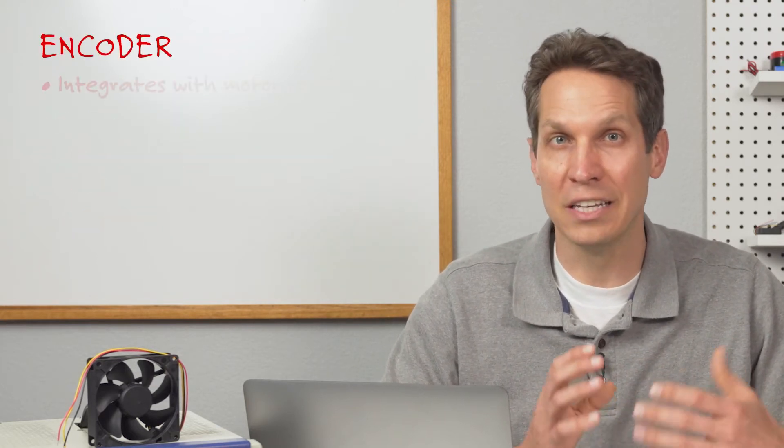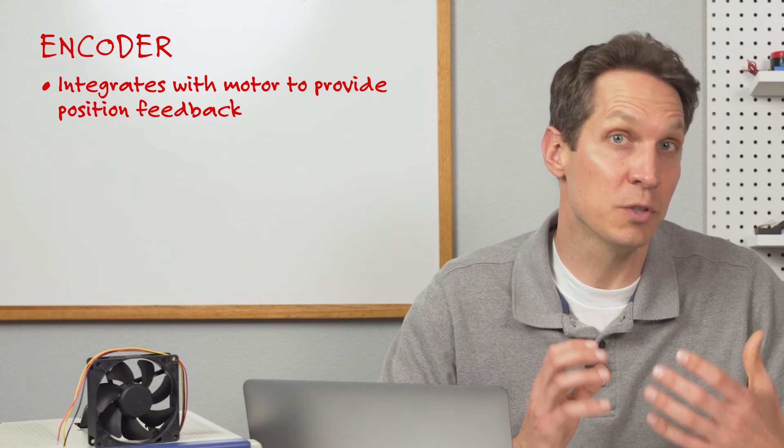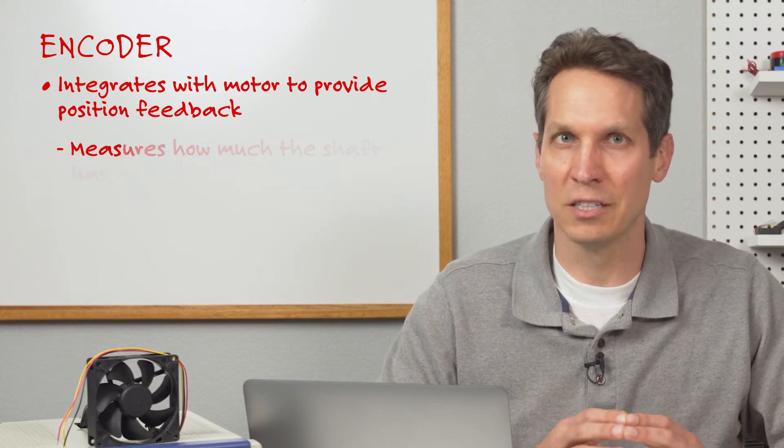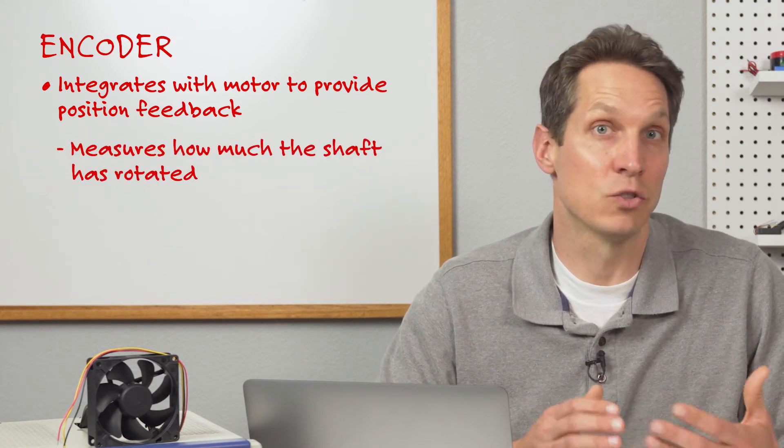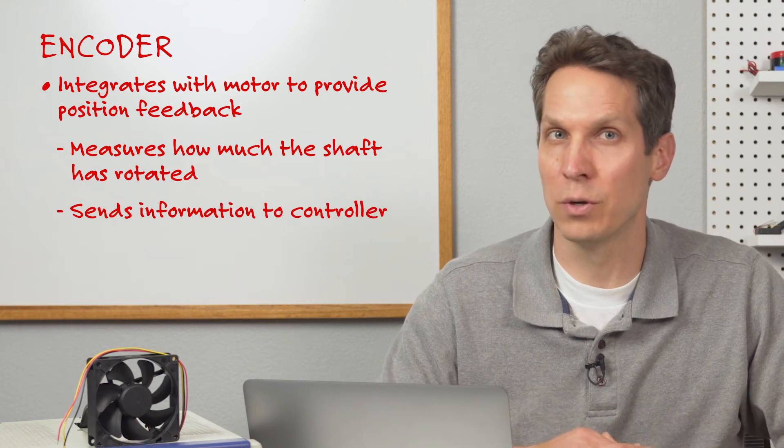An encoder is something you can integrate with your motor to provide that type of position feedback. Using various methods, it measures how much the shaft is rotated and sends this information to a controller of your choice.